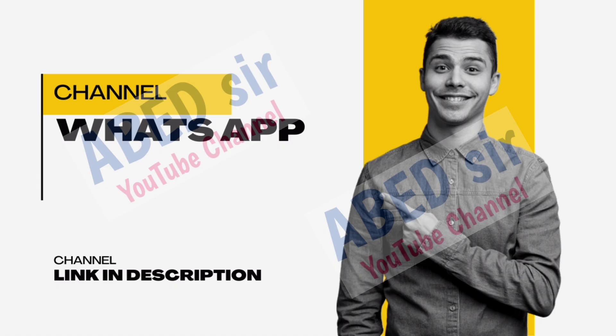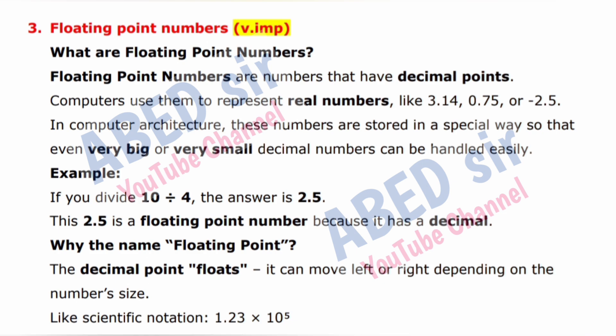Next important short question is 3: What are floating point numbers? Floating point numbers are numbers that have decimal points. Computers use them to represent real numbers like 3.14, 0.75, or minus 2.5. In computer architecture, these numbers are stored in a special way so that even very big or very small decimal numbers can be handled easily. Example: If you divide 10 by 4, the answer is 2.5 — this is a floating point number because it has a decimal. Why the name floating point? The decimal point floats; it can move left or right depending on the number's size.